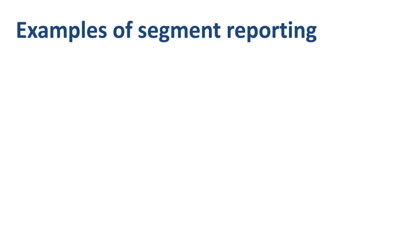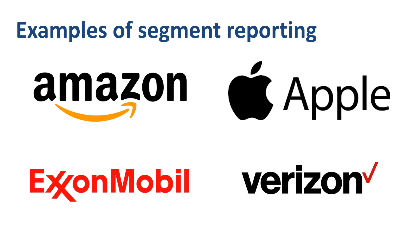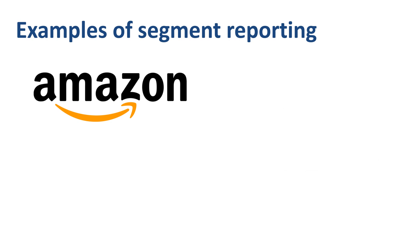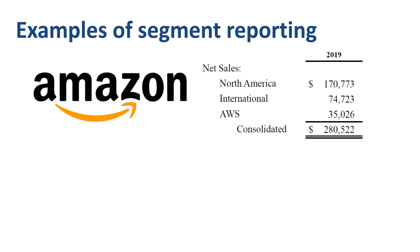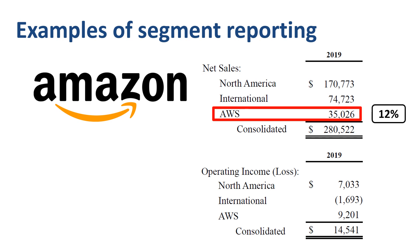What can we learn from the segment reporting by Amazon, Apple, ExxonMobil, and Verizon? In Amazon's segment reporting, three operating segments are disclosed: North America, International, and AWS. This is what I would call a hybrid structure. The first two operating segments, North America and International, are geographically based segments earning money from retail sales of consumer products and subscriptions. The AWS segment earns money from global sales of compute, storage, database, and other service offerings. In revenue, AWS is 12% of the total. In operating income, AWS is 63% of the total.